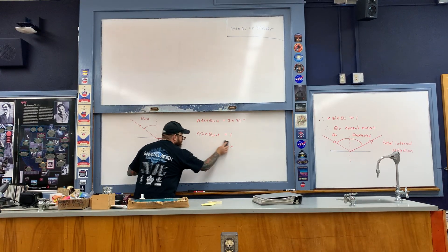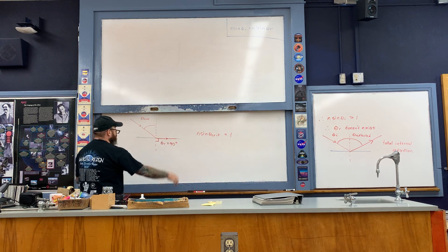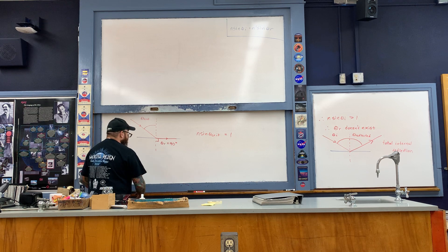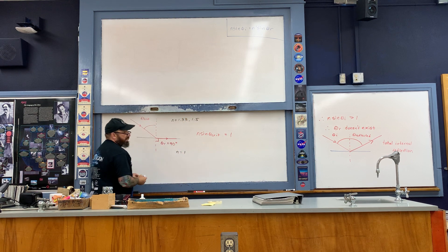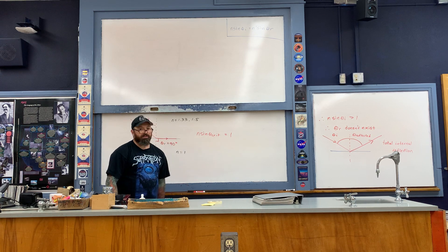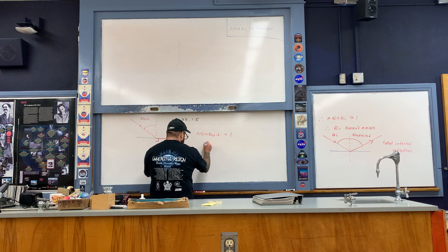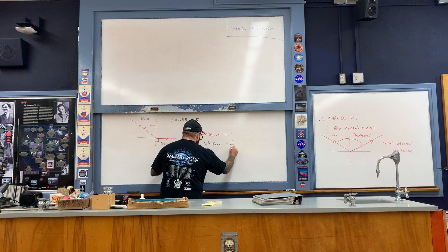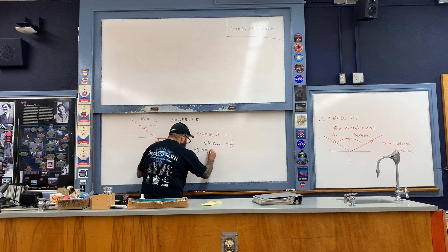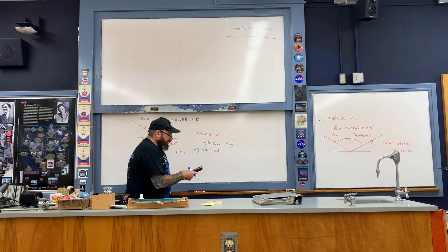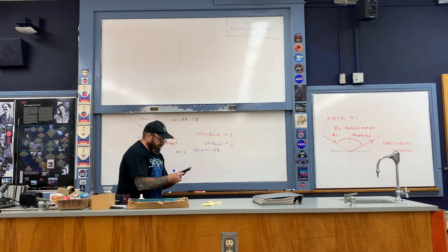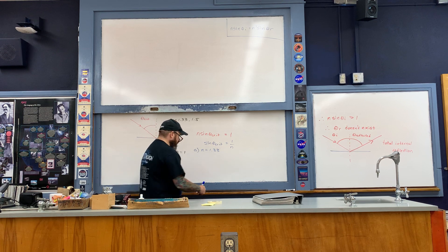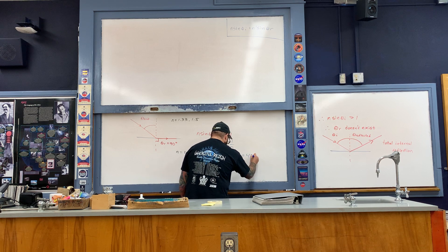Mathematically there's not much to this. We use the Snell's law expression at the critical angle, where N times sine of the critical angle equals one. Solving for the critical angle gives: sine of theta-crit equals 1 over N. For Part A, with N equal to 1.33 for water, the critical angle is the inverse sine of 1 divided by 1.33, which comes out to nearly 49 degrees. That's basically what you were seeing in the demonstration.